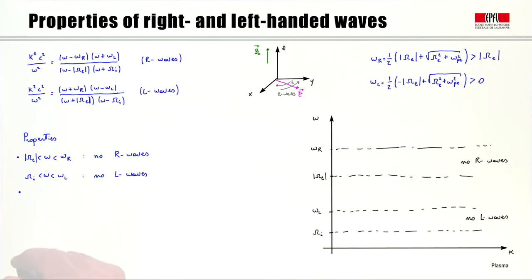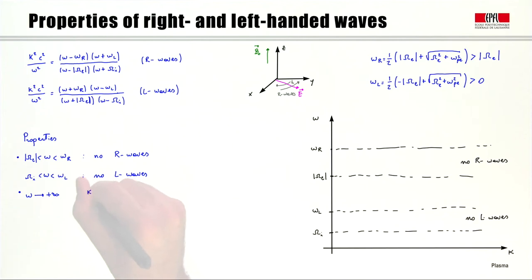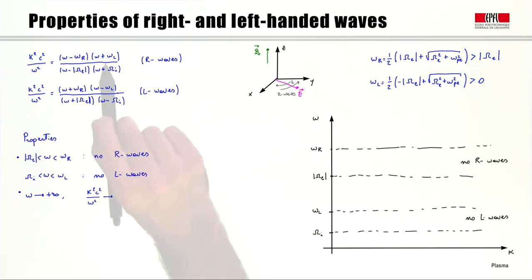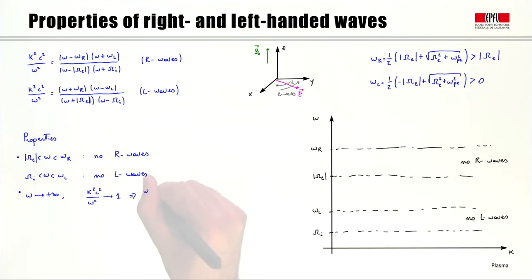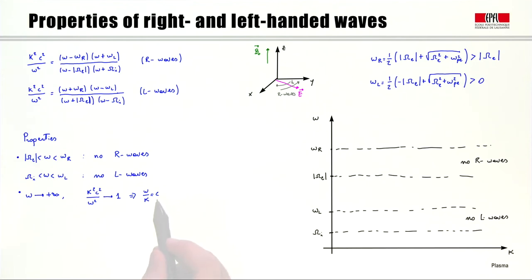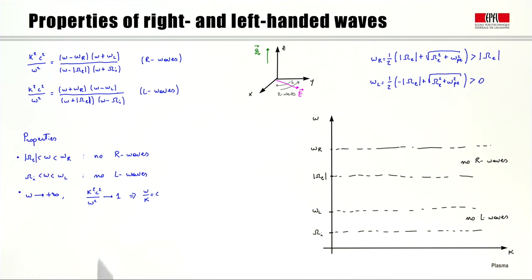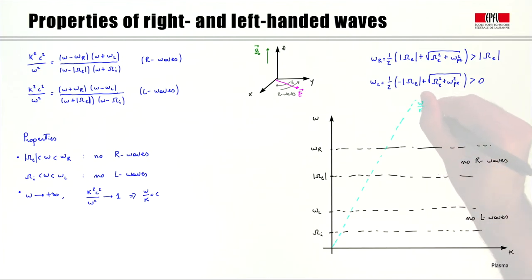It is also interesting to look at how these waves behave when ω tends to infinity. In that case, k²c²/ω² tends to 1, since both fractions tend to 1, meaning ω/k equals c. Basically, we have waves propagating at the speed of light — they are electromagnetic waves. The plasma has no time to respond at such high frequencies. There will therefore be an asymptote ω/k = c to which these waves tend.